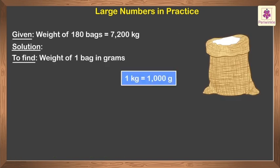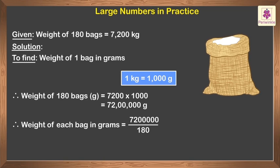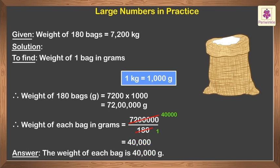We know that one kilogram is equal to one thousand grams. Therefore, the weight of one hundred eighty bags in grams is equal to seven thousand two hundred multiplied by one thousand, which is equal to seventy-two lakh grams. Thus, the weight of each bag is forty thousand grams.